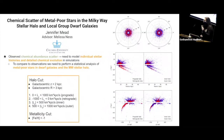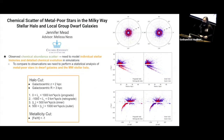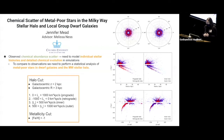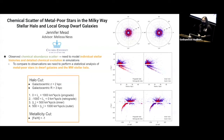Part of the reason we are interested in metal-poor stars, particularly in dwarf galaxies, is because we suspect that dwarf galaxies should preserve the signatures of Population III stars and really the first few generations of stars. When we look at these dwarf galaxies, we observe a chemical abundance scatter.